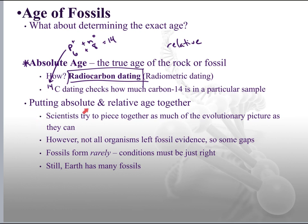By combining absolute and relative aging, scientists can try to piece together as much of the evolutionary picture as they can. When comparing rock strata from one part of the globe to another, we can match up layers by absolute and relative age. However, not all organisms left fossil evidence — there are some gaps. Creating a fossil is actually incredibly difficult; conditions have to be just right: pressure, no disturbance. So fossils rarely form, and there are going to be some gaps.